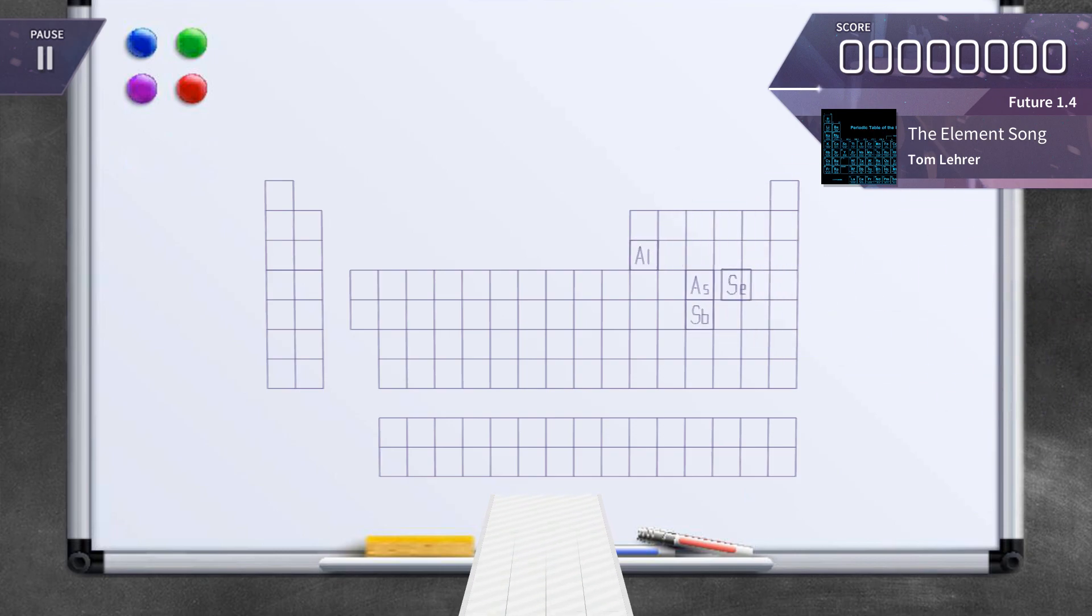There's antimony, arsenic, aluminum, selenium, and hydrogen, and oxygen, and nitrogen, and rhenium, and nickel, neodymium, neptunium, germanium, and iron, americium, ruthenium, uranium, europium, zirconium, rhodium, vanadium.